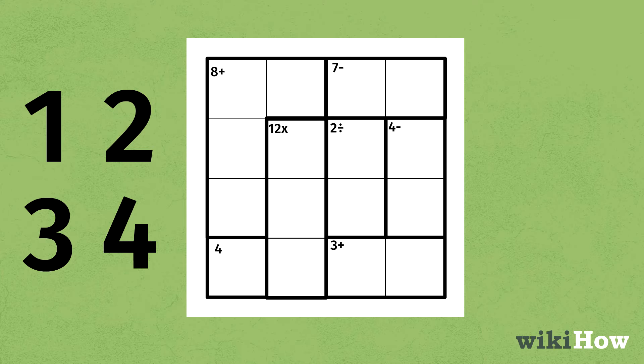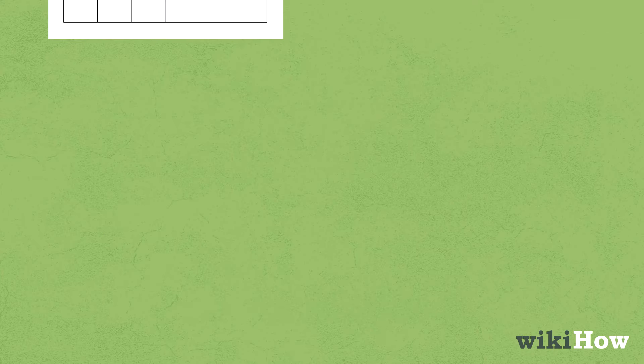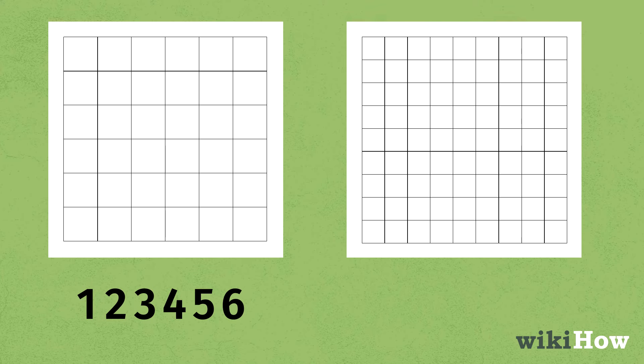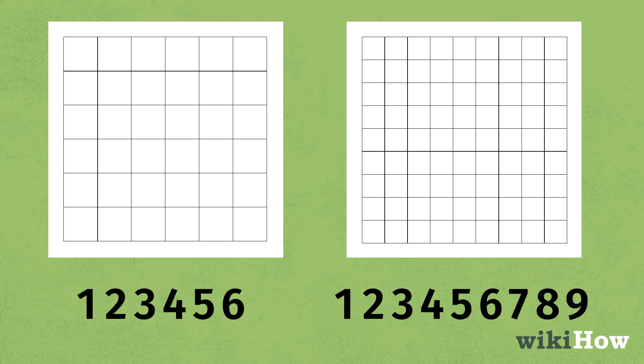You can scale your grid to any number. For example, if your grid was 6 by 6, you would have 1 through 6 without repeating. Or, if your grid was 9 by 9, you would have 1 through 9 without repeating, and so on.